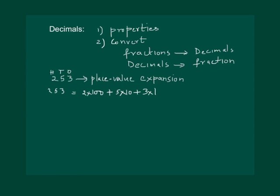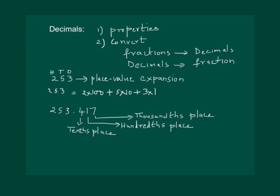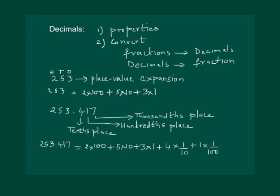Now consider the decimal number 253.417. Here the decimal point separates the units place from the tenths place, and in expanded form it can be written as 2 into 100, plus 5 into 10, plus 3 into 1, plus 4 into 1/10, plus 1 into 1/100, plus 7 into 1/1000.